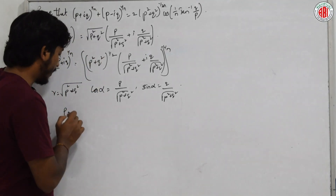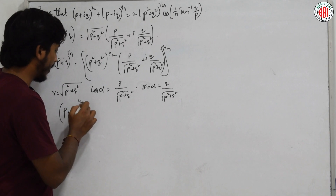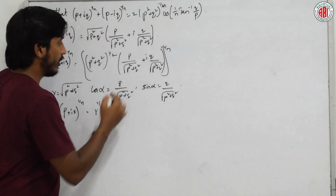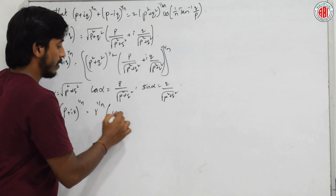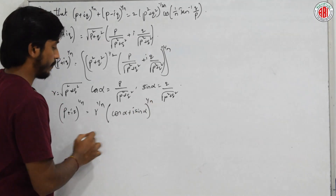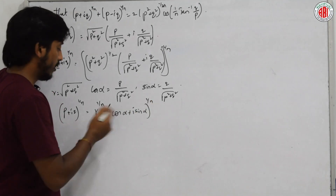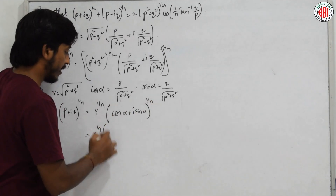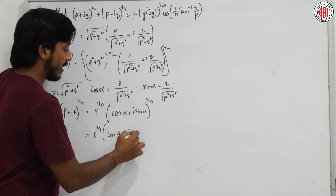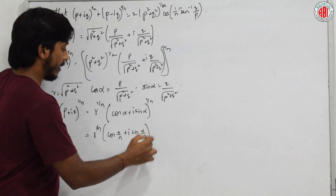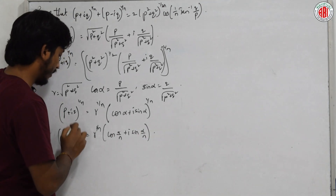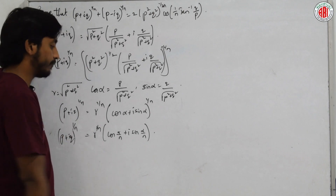So (p + iq)^(1/n) = r^(1/n) · (cos α + i sin α)^(1/n). Using De Moivre's general formula, this becomes r^(1/n) · (cos(α/n) + i sin(α/n)). This is the first term.